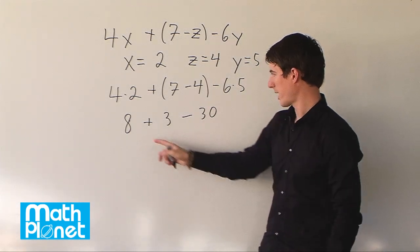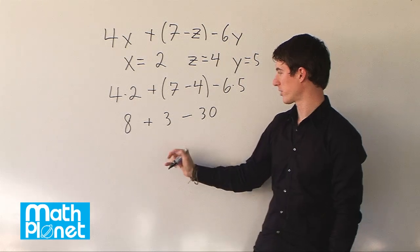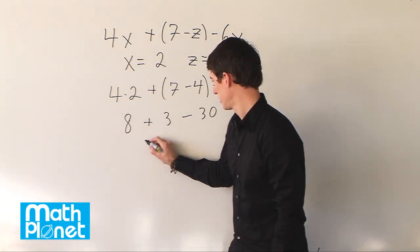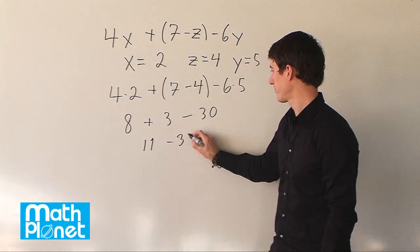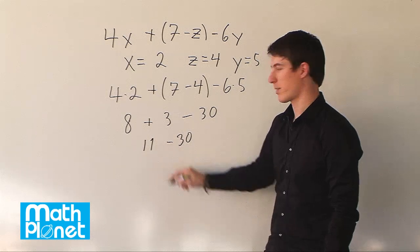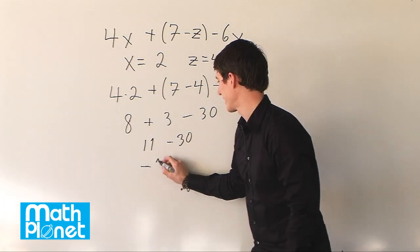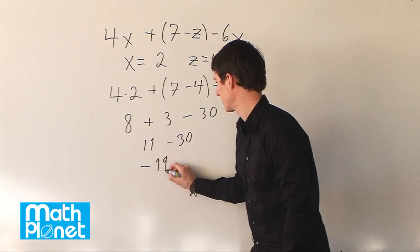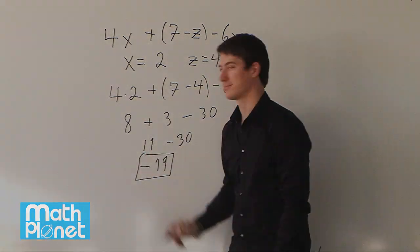Now we can add these. So we have 8 plus 3 is 11, minus 30, and 11 minus 30 is negative 19. And that's our final answer.